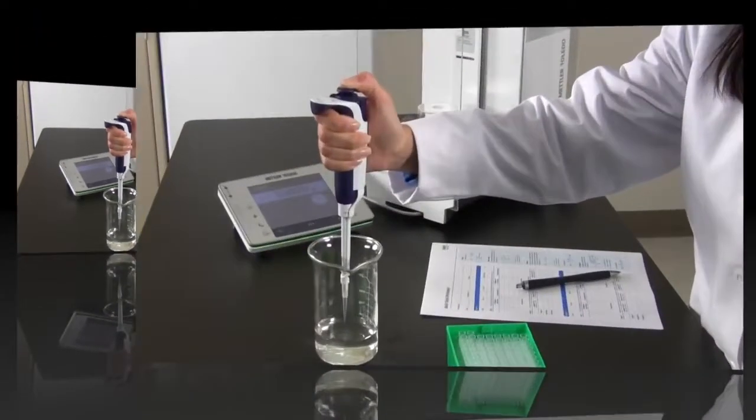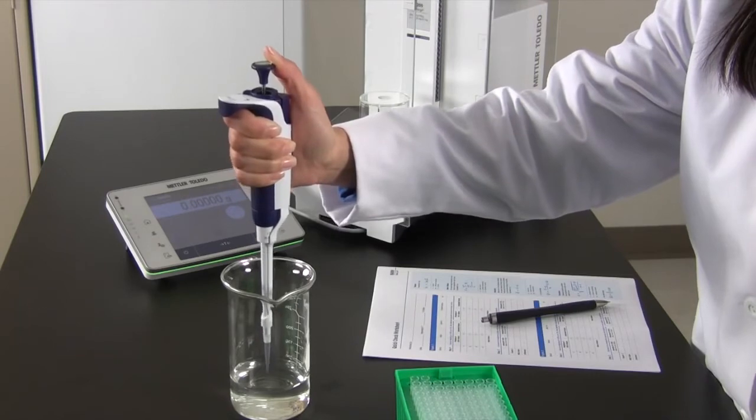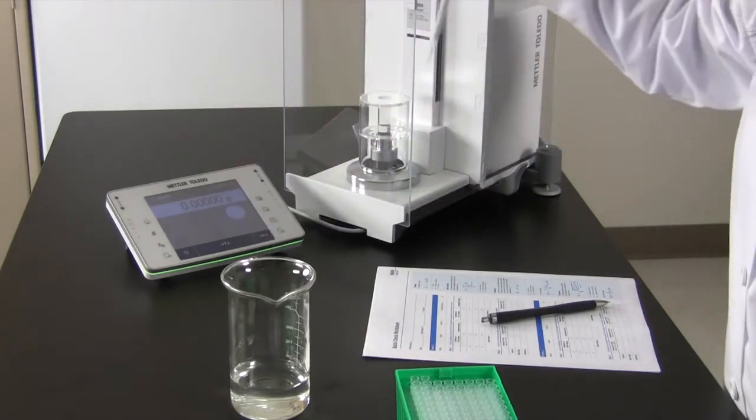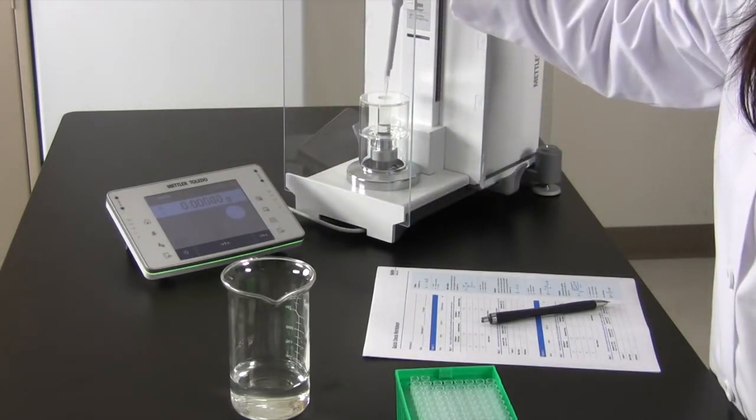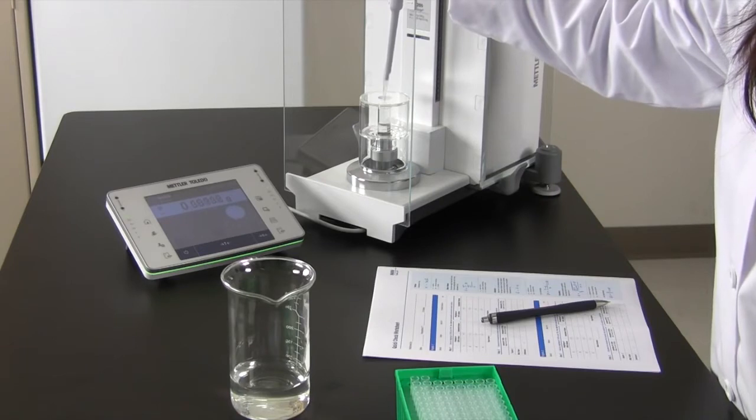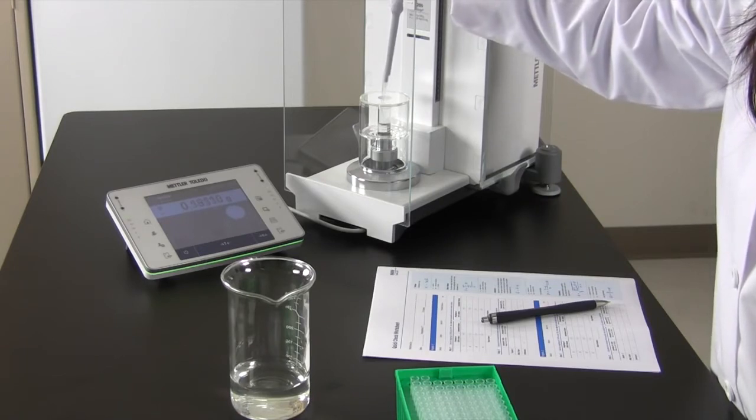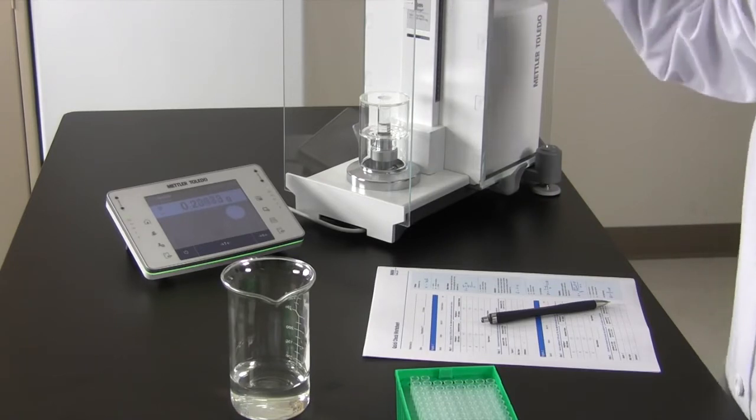Now, immerse the tip to the appropriate depth and aspirate the deionized water. Carefully move the pipette over the vessel on the balance and dispense the water, touching off against the side of the vessel to remove any excess liquid.